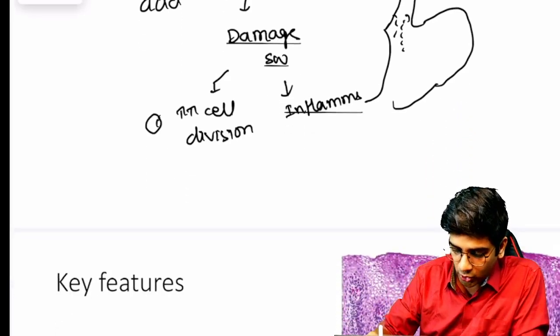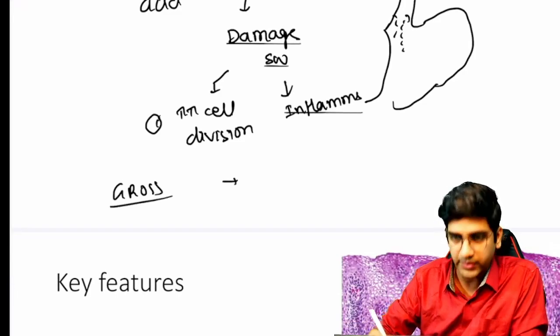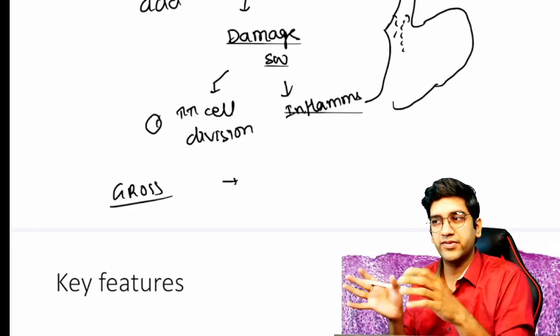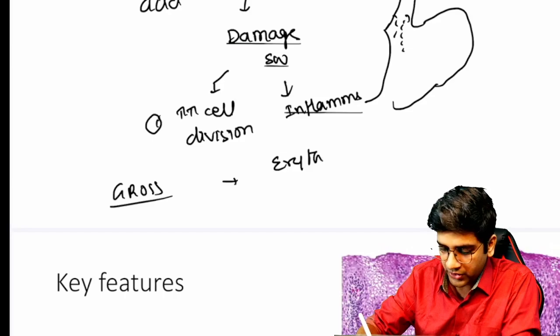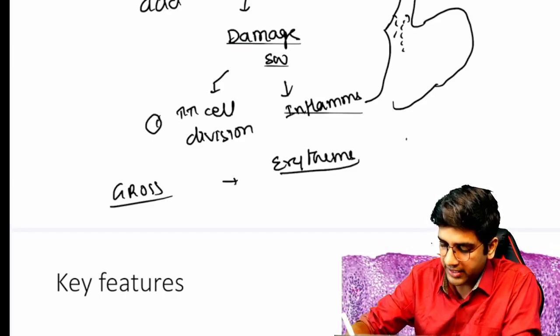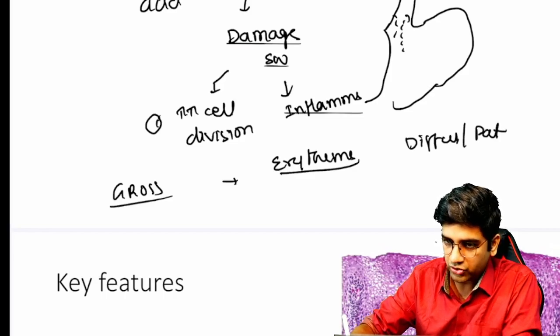Now let's go to the gross appearance of GERD. There are two things for me: In an acute onset, if the person is having an endoscopy done, you might see just erythema. The erythema will be appearing grossly; it can be either diffuse or patchy based on the disease and based on the chronicity also.